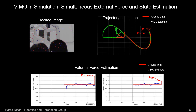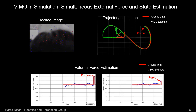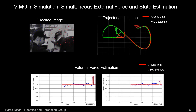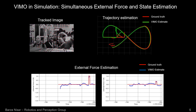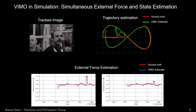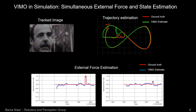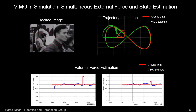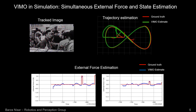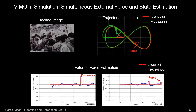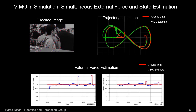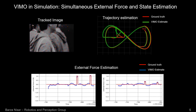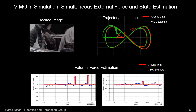As soon as the external force is applied, we see a peak in the graphs and a bump in the trajectory, representing WEMO's capability of simultaneously estimating external forces together with the robot state. Notice that WEMO not only captures instantaneous external disturbances but also drag forces, as depicted by the sinusoidal nature of the blue curve.